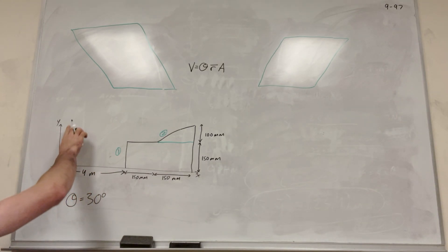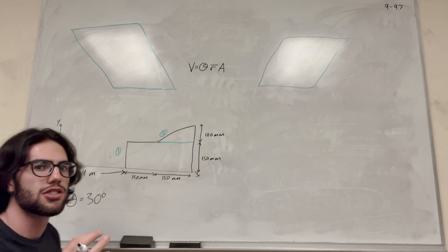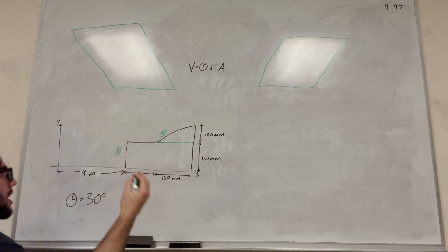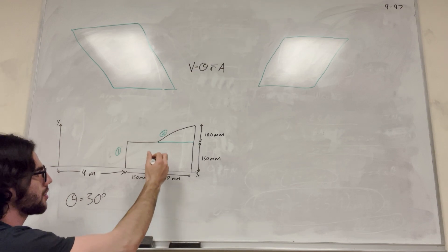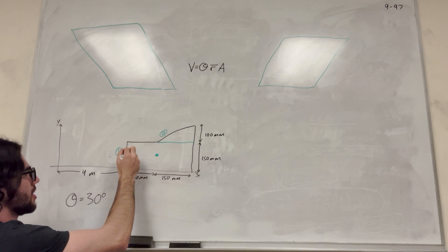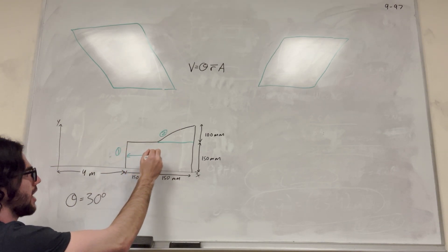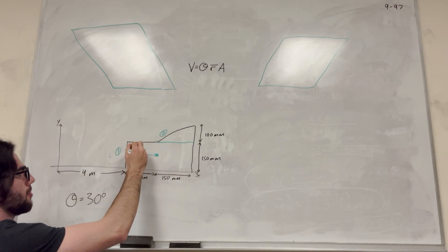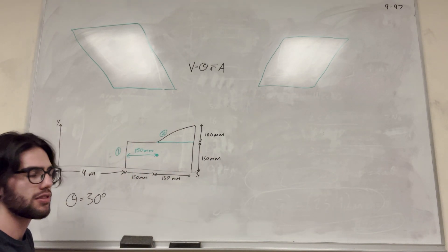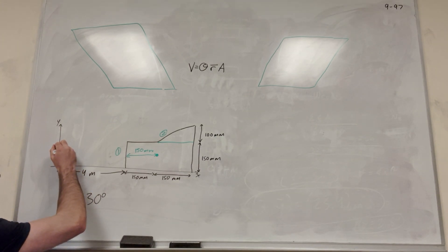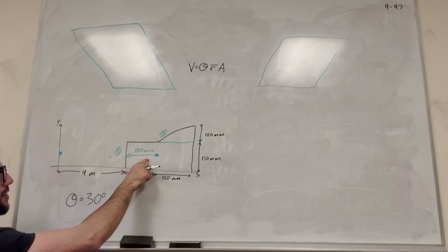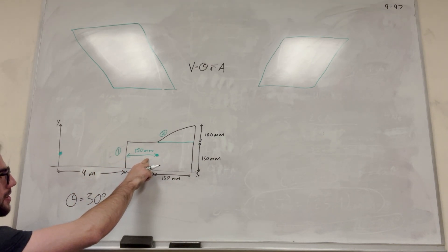Now it's easy to find the area of each and we're going to need to find the center of mass. We're rotating around the y-axis, so we need to find the center of mass relative to y for each shape. For the rectangle, it's going to be right in the center, so this distance is 150 millimeters. That means the radius is the distance from the y-axis all the way to the center — so it's going to be 4 meters plus 150 millimeters.